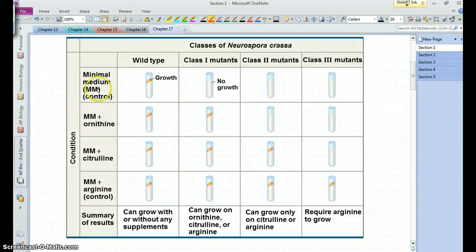Under just minimal medium, none of the mutants grow. So there's something wrong with them, they're mutants. But now we see that these class 1 mutants, if they're provided with minimal medium and then this extra compound ornithine, they do just fine, but then the class 2 and 3 mutants do not.